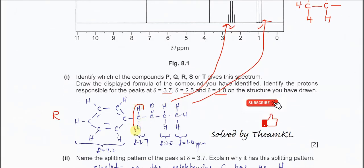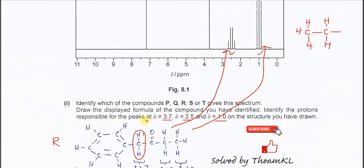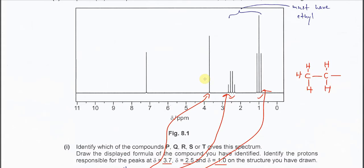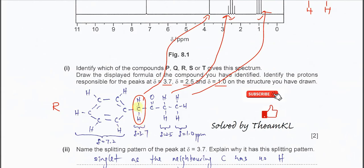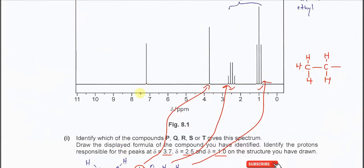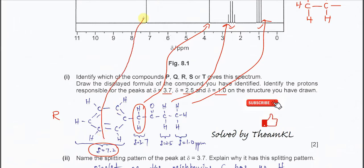The other CH2 group gives a singlet around 3 to 4 ppm because it is next to the benzene ring. There is no splitting because there are no protons on the adjacent carbon — no spin-spin coupling, so just a singlet. The benzene ring protons give a singlet at 7.2 ppm, as stated earlier.